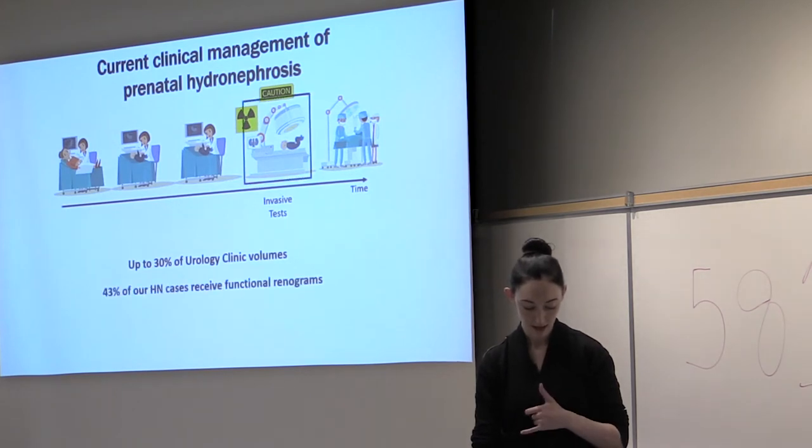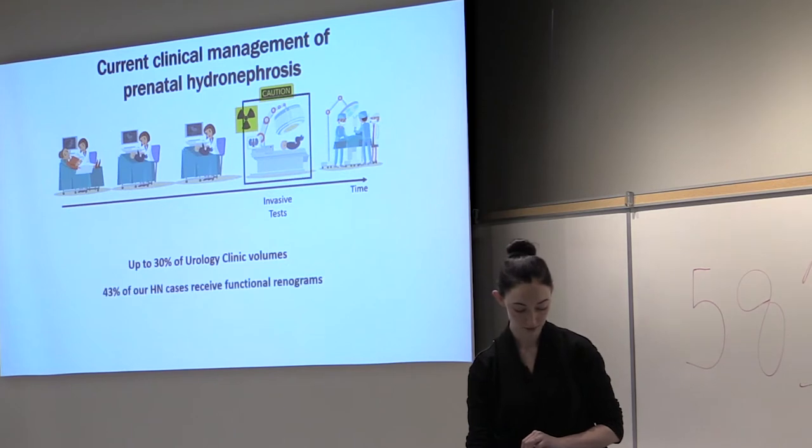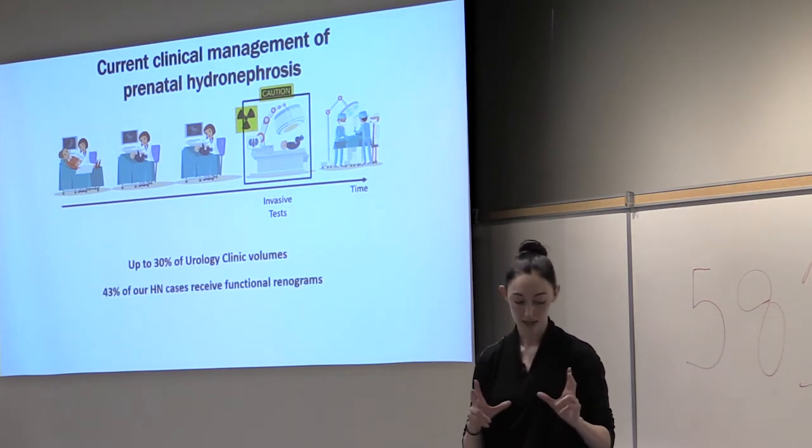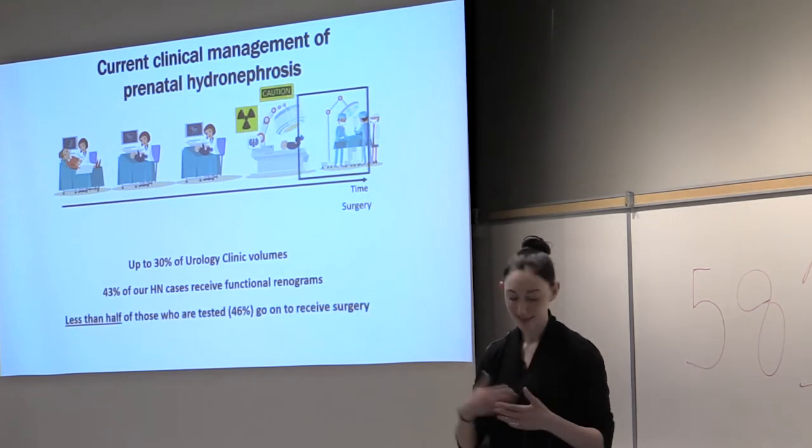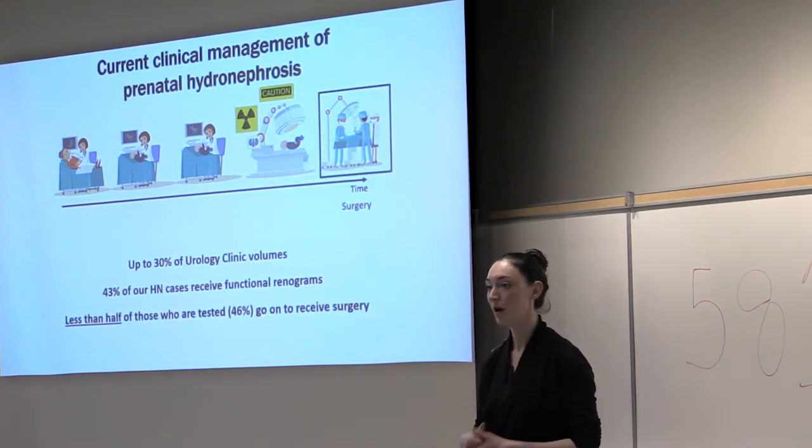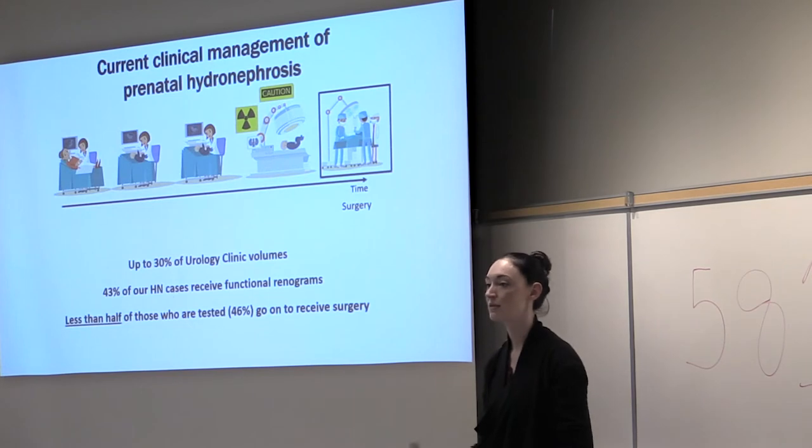After all of this, which takes 30% of urology clinic volumes, 43% of those kids are getting a functional renogram, so an invasive test to assess function, yet less than half are going on to surgery. A lot of kids who aren't getting surgery are getting invasive testing, and all the kids are getting these repeated ultrasounds, repeated tests.